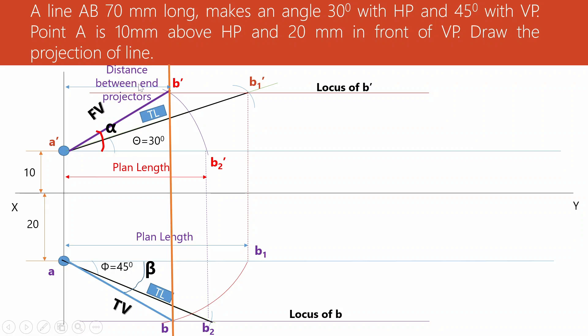When the distance between end projectors is given, you can use that condition to draw the projection of the line. In the exam, have a clear understanding of which point intersects which, what is front view, what is top view, and what alpha and beta are. Draw this reference figure during the exam. Most problems are easy if you have a clear understanding. I hope you liked this video — please subscribe to our channel, thank you very much.